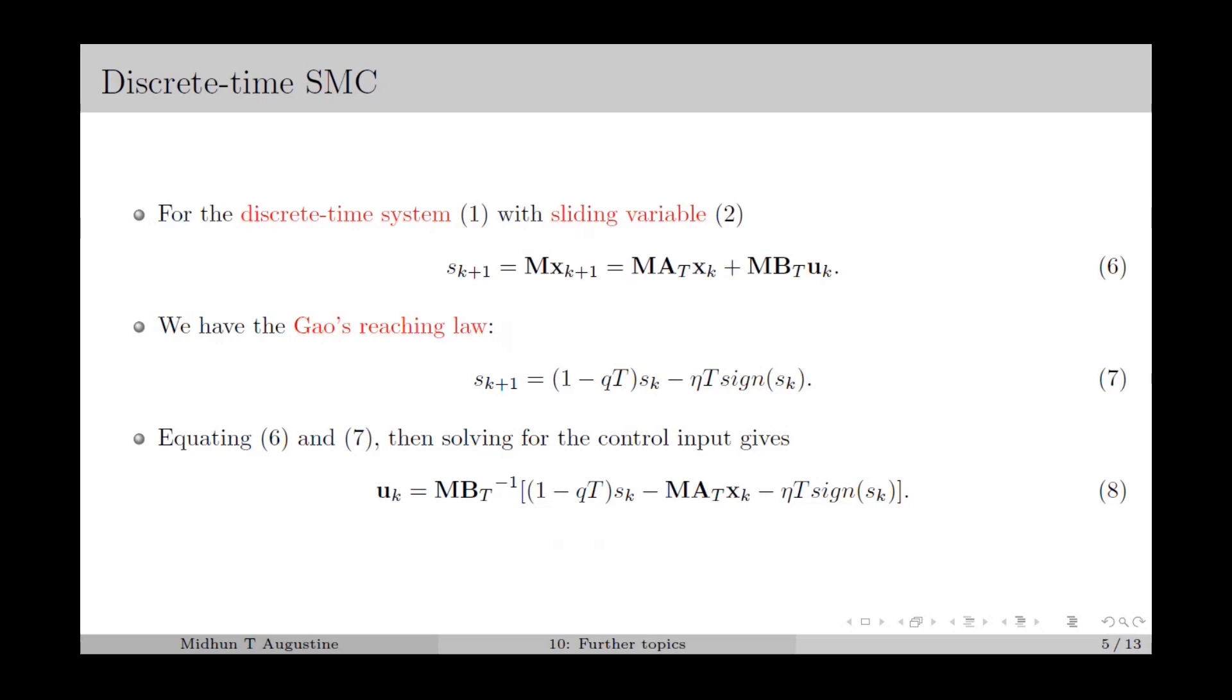With Gao's reaching law, we require s_{k+1} as in equation 7 for ensuring finite-time reachability. Equating this with the previous equation and solving for u_k, we obtain u_k as in equation 8. This is the Gao's reaching law-based design of discrete-time SMC.